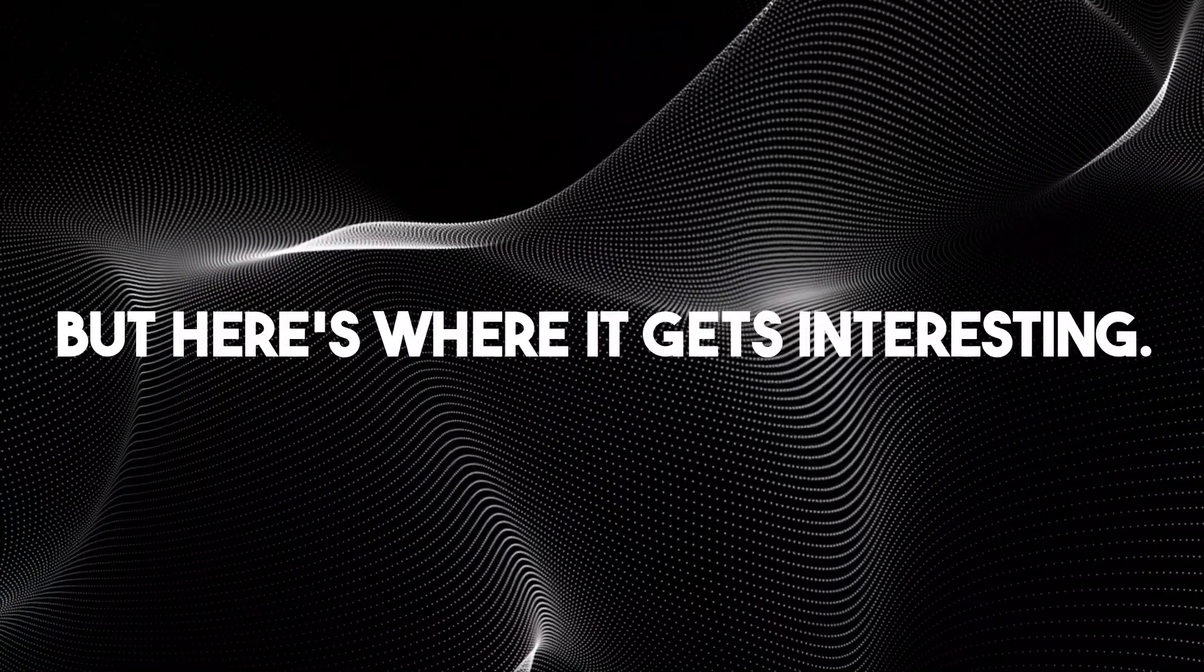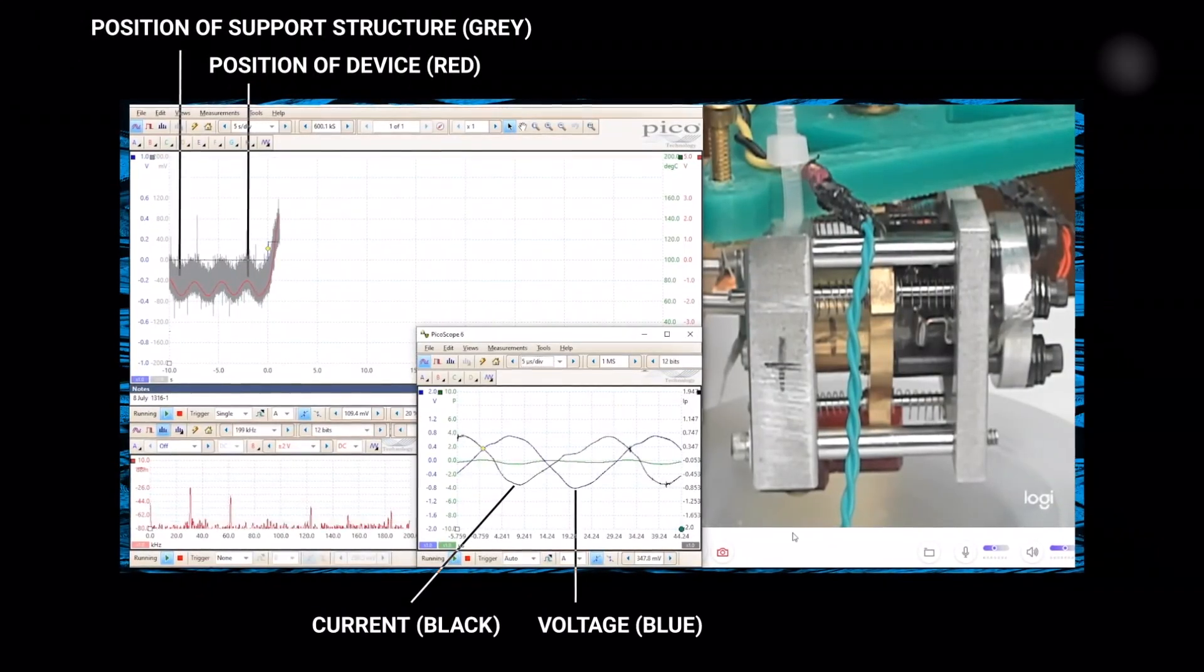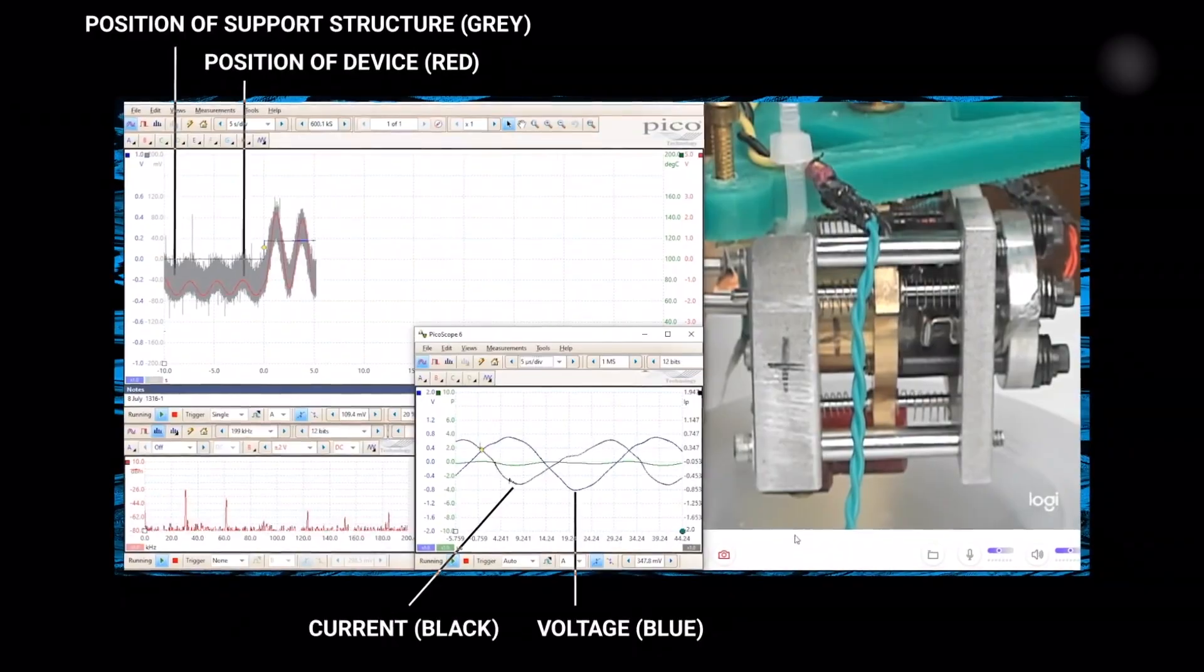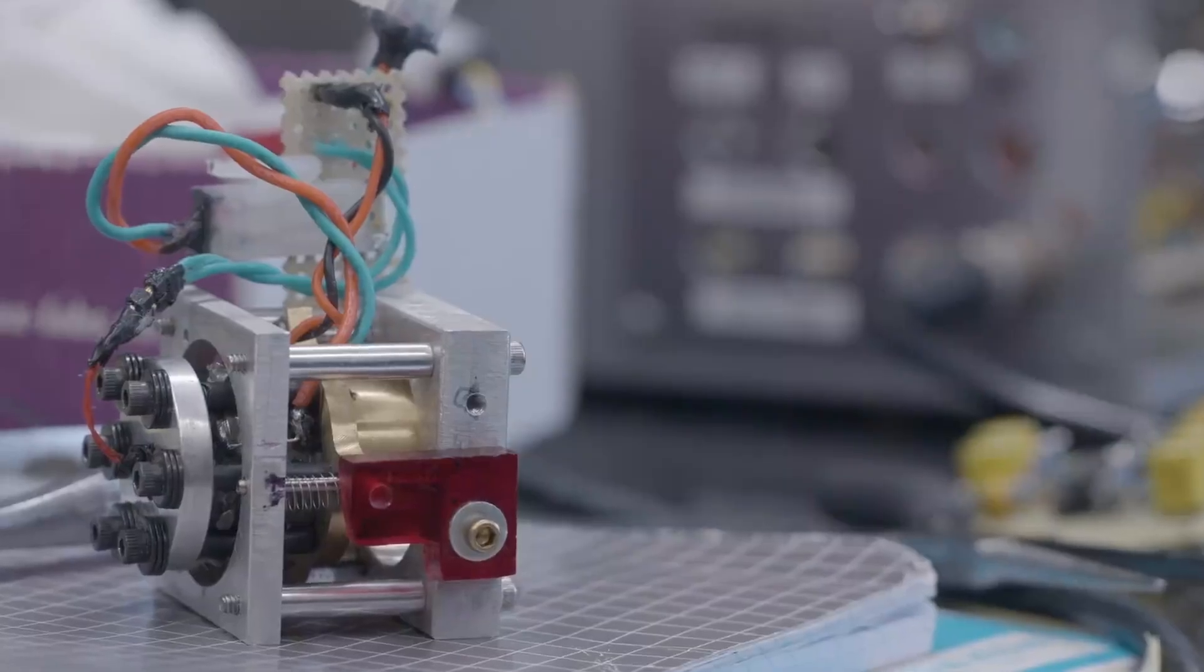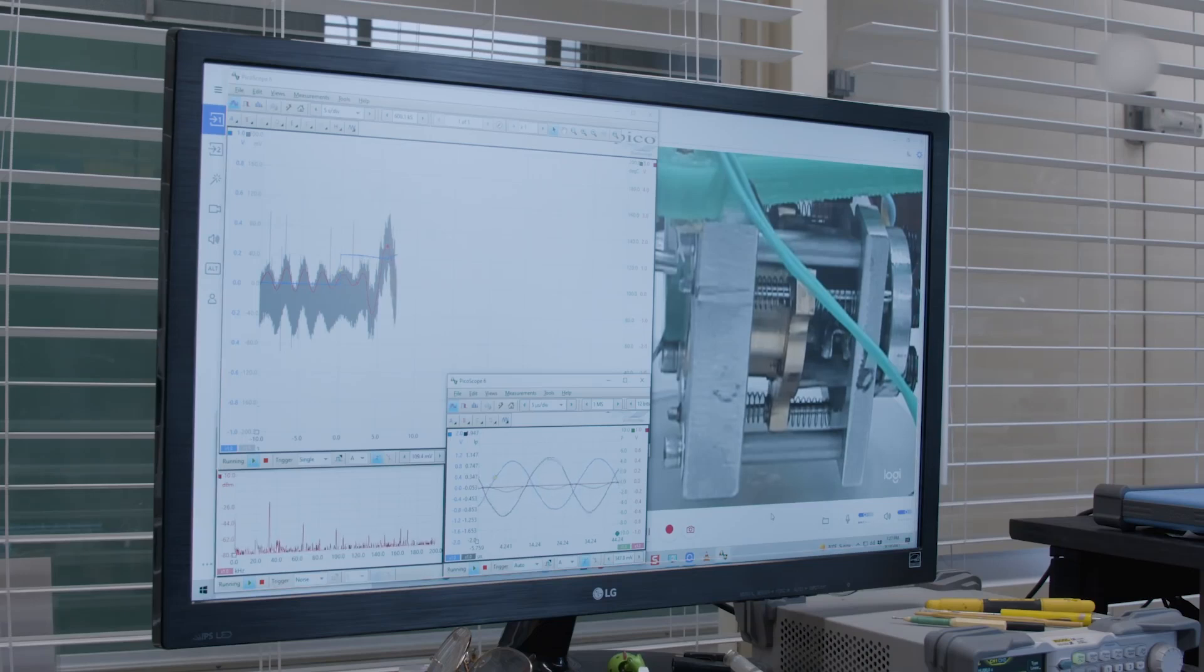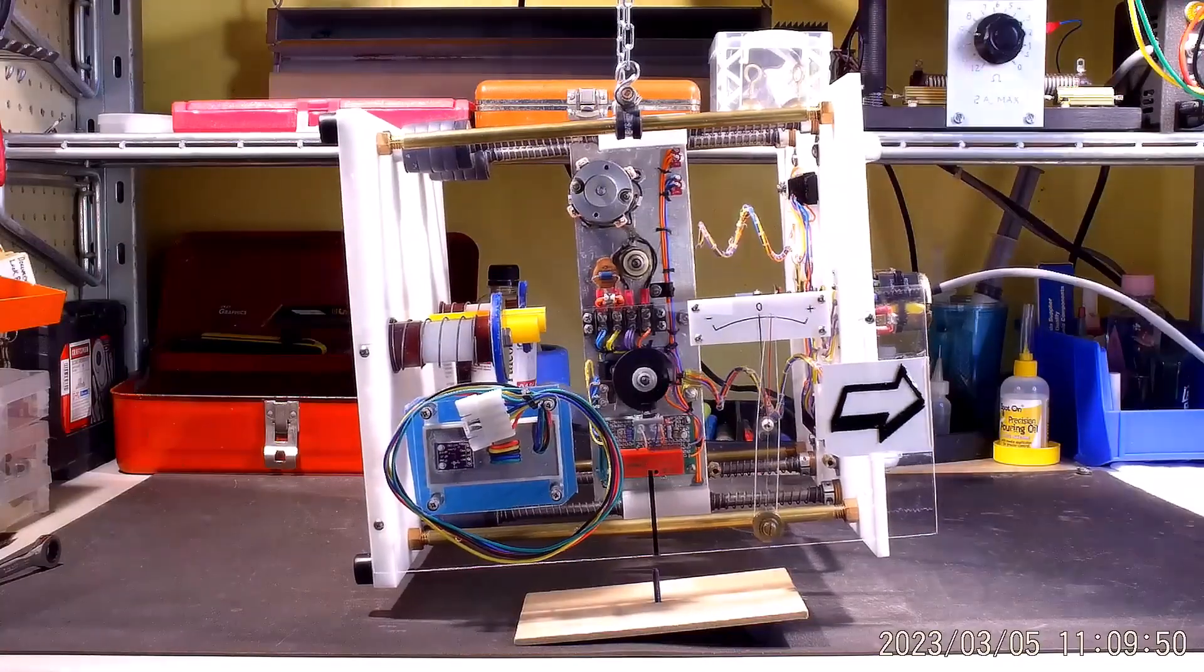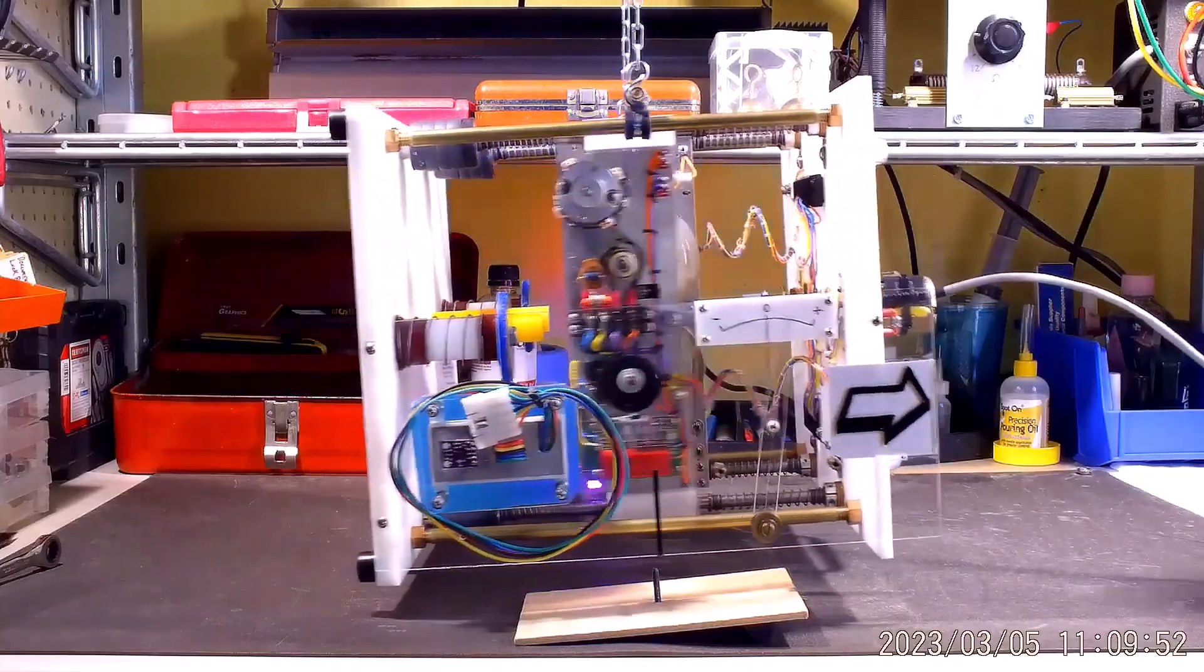But here's where it gets interesting. The device is designed to vibrate primarily in one direction, causing a slight acceleration. According to the team's understanding of Mach's principle, this acceleration allows the device to interact with the gravitational potential of the universe. As it does so, the mass of the crystals fluctuates ever so slightly.